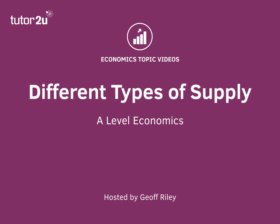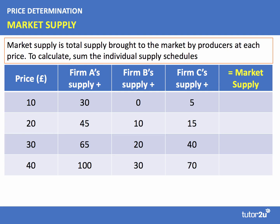Welcome back. In this video we're going to take a look at two concepts: market supply and joint supply. Market supply is defined as the total supply brought to the market by producers or suppliers at every particular price level. To calculate it — and you'll often get an exam multiple choice question on this — you sum the individual supply curves.